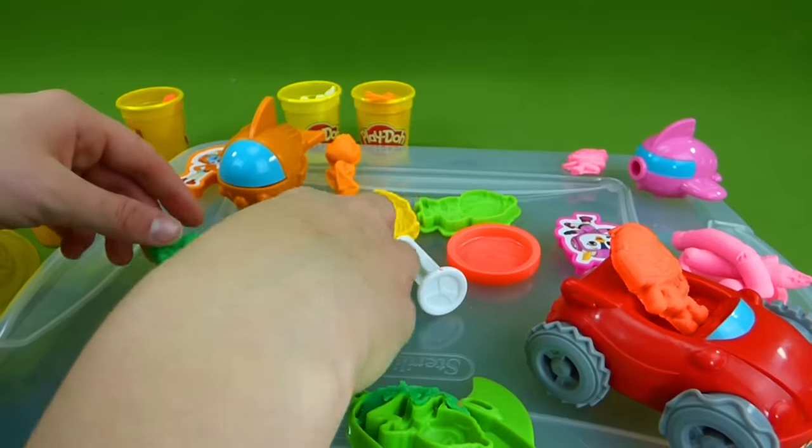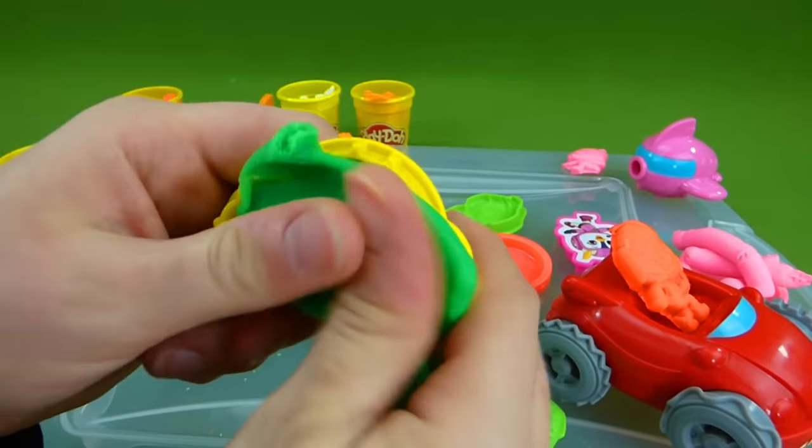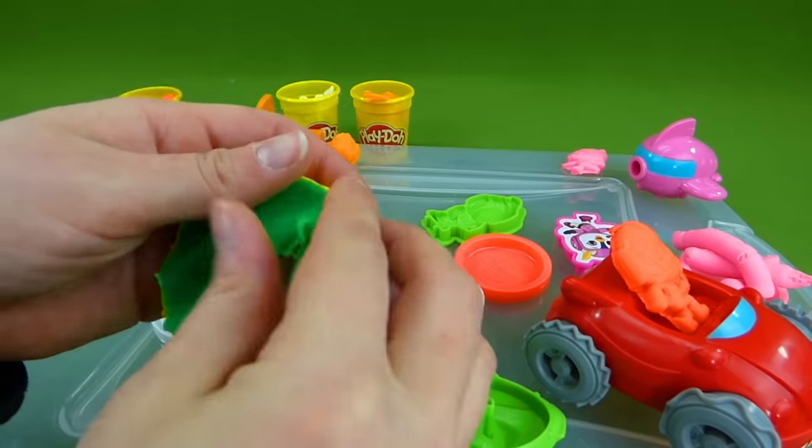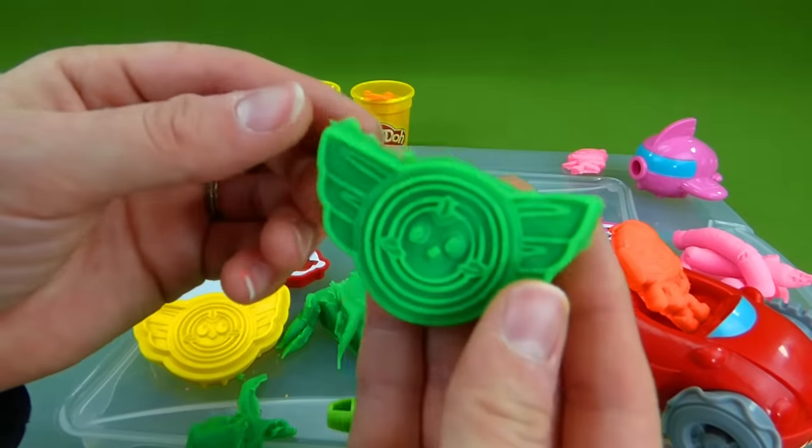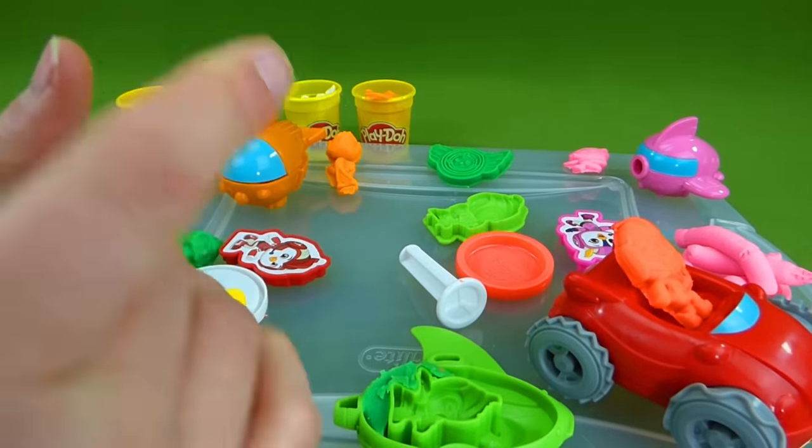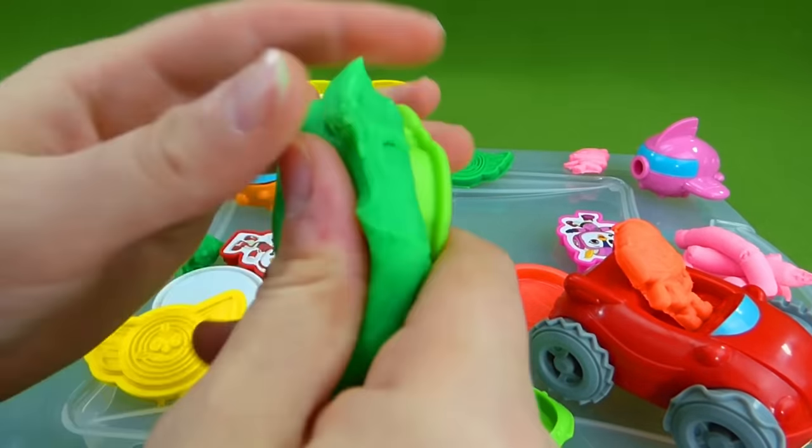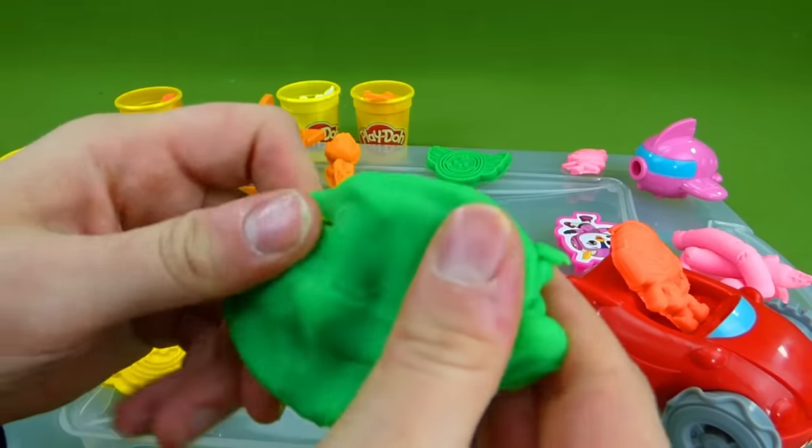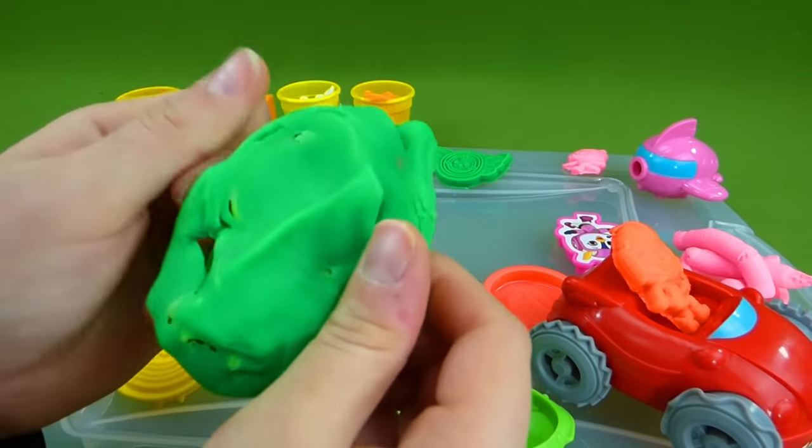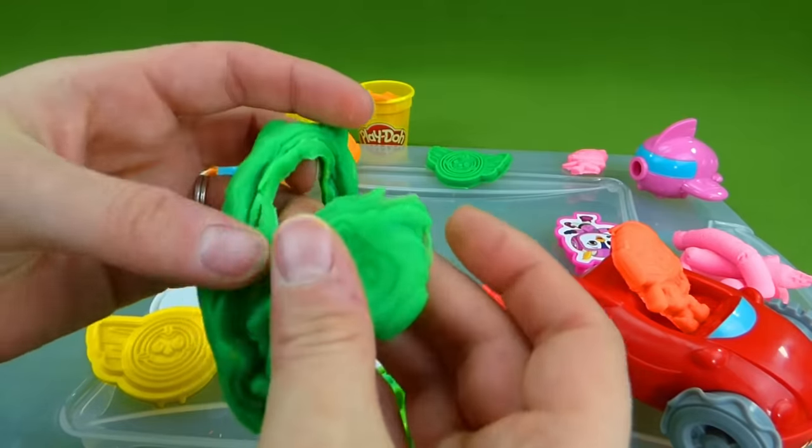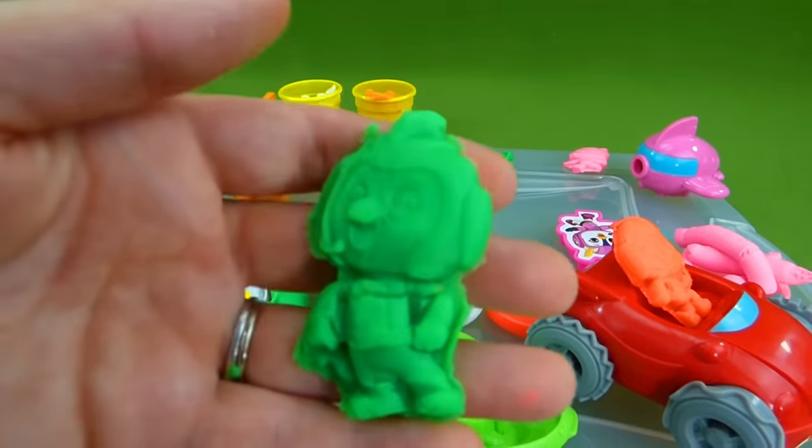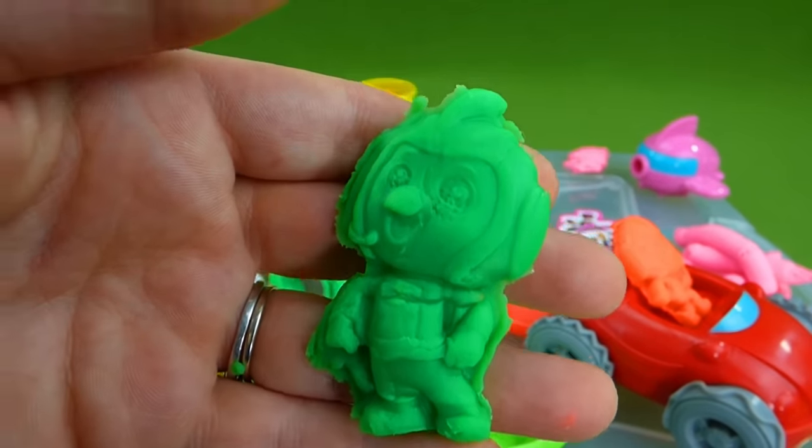And then we have this mold here, which we could do in any of the colors if we wanted. And we're going to do it in green. That turned out really well. Look at that. Super cool. And one more, you guys. Right here, we're going to do the Brody mold. And break away the extra. Almost got it. It's Brody! I almost dropped him. And there is our Brody Play-Doh.